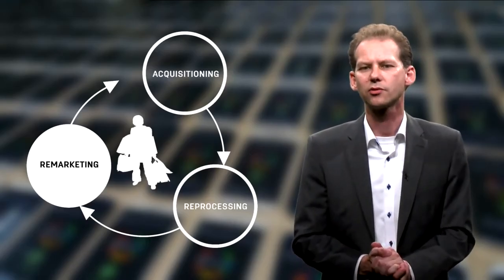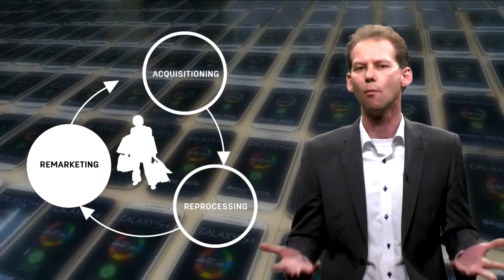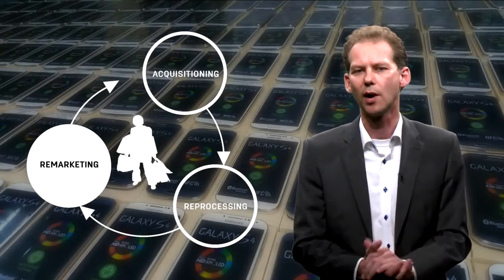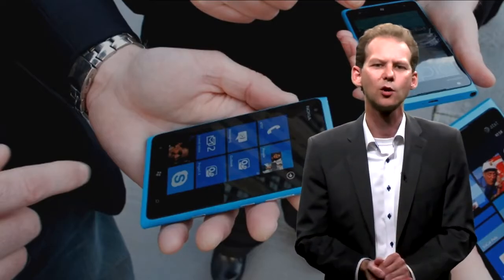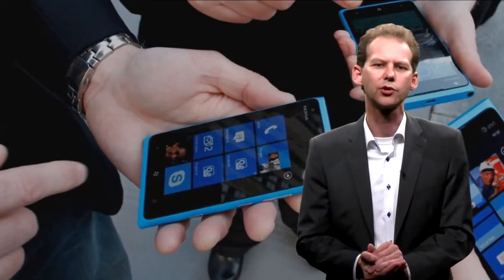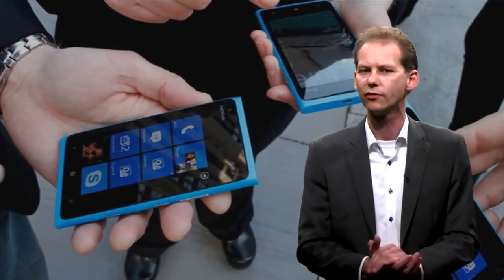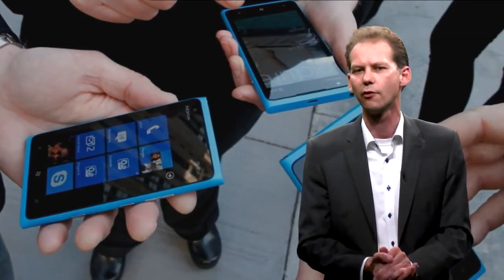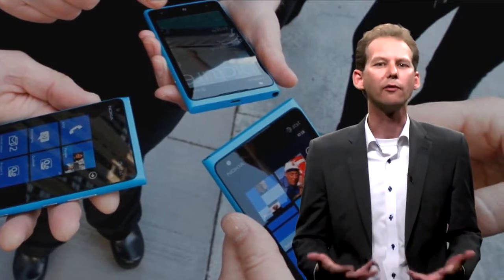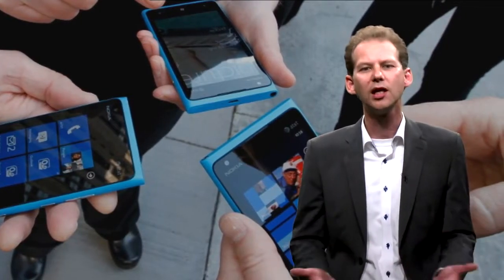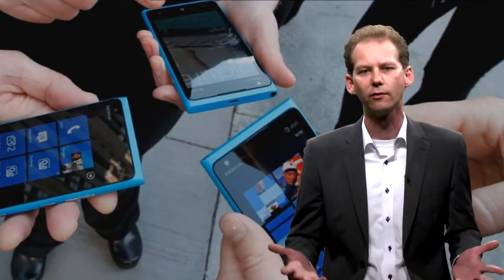The final business process is remarketing — that is, identifying markets that want to buy the reprocessed products. Recycled materials of high quality can be used for the manufacture of new products, while refurbished products can target secondary markets against a lower price. But beware: if any of the three key business processes fail, we do not have a closed loop.